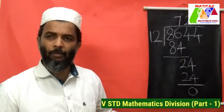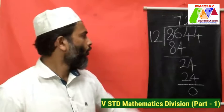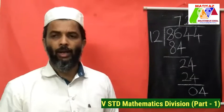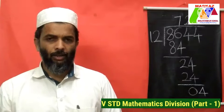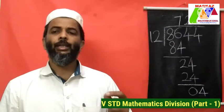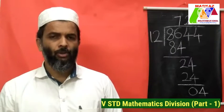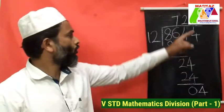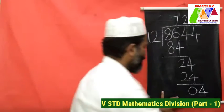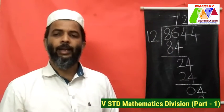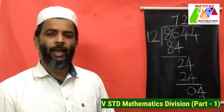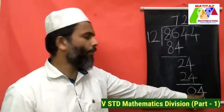Then subtract: 24 minus 24 is equal to 0. The next step is to bring down the next digit, which is 4. Bring down 4, then divide 4 by divisor 12. Since 12 is greater than 4, it is not possible to divide, so write 0. Multiply 0 into 12 is equal to 0. Then subtract: 4 minus 0 ends the problem. So the quotient is 720 and the remainder is 4.